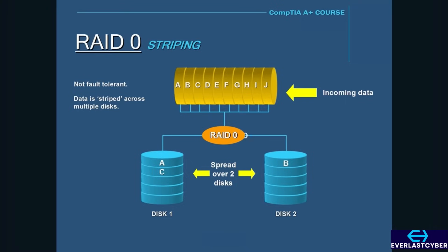If just one of these disks fails, then all the data would be lost. The only reason why you would want to use RAID 0 is speed, because when you have two disk controllers working instead of one, accessing data is much faster.